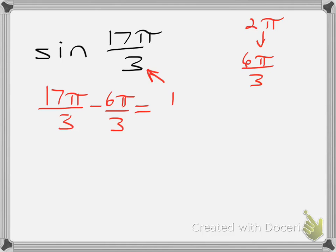If I subtract once, I'll get 11 pi over 3. It's still bigger than 6, so I'll subtract one more time. Now I'll have 5 pi over 3.